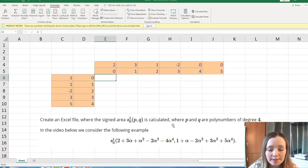And we will consider the following example. The first polynomial is this polynomial of degree 4 and the second one is this polynomial. And first thing that we do we enter the coefficients of these polynomials.